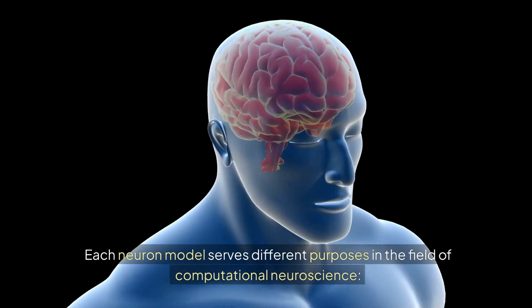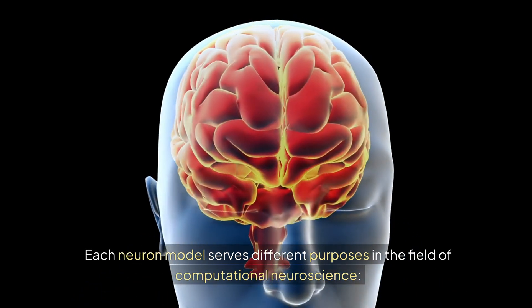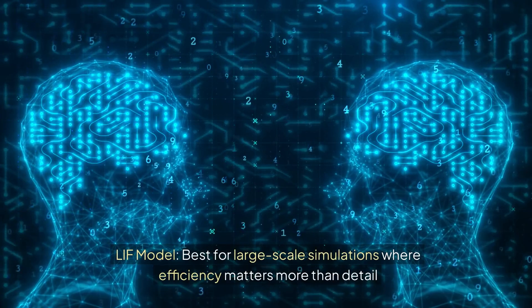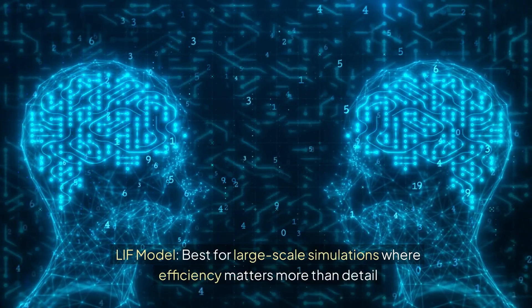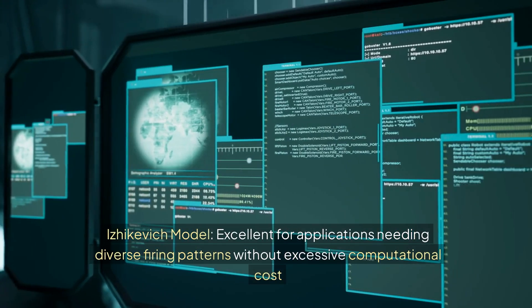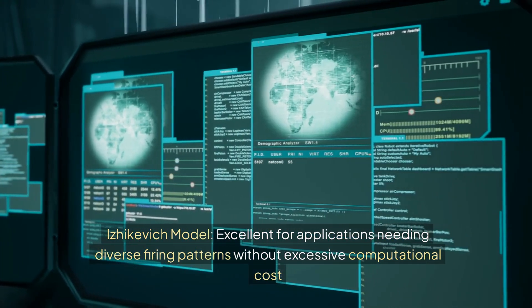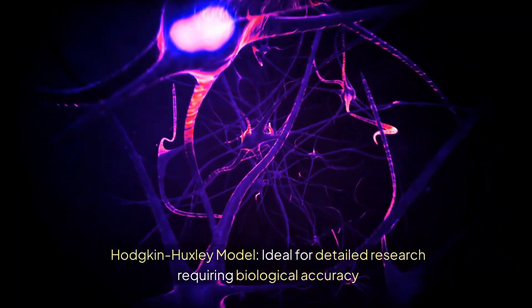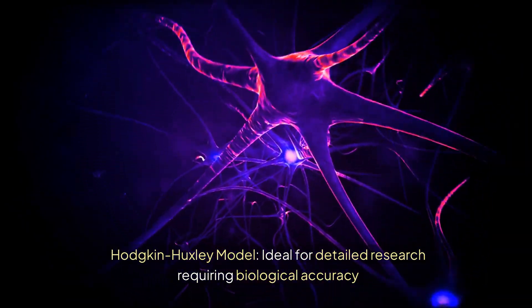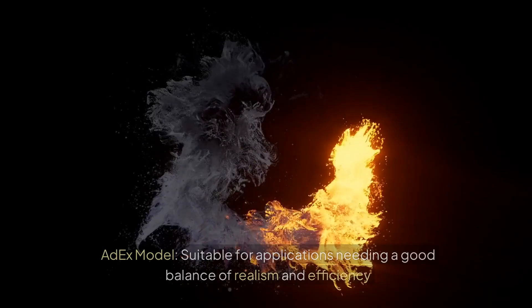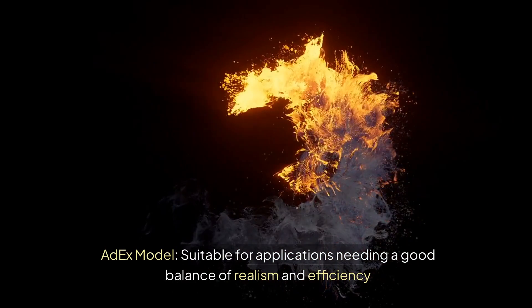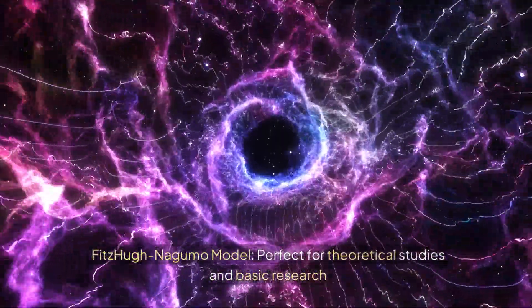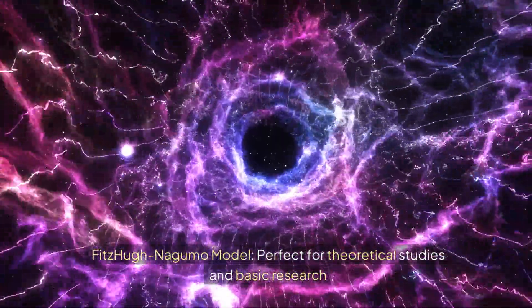Conclusion. Each neuron model serves different purposes in the field of computational neuroscience. LIF model: best for large-scale simulations where efficiency matters more than detail. Izhikevich model: excellent for applications needing diverse firing patterns without excessive computational cost. Hodgkin-Huxley model: ideal for detailed research requiring biological accuracy. ADEX model: suitable for applications needing a good balance of realism and efficiency. FitzHugh-Nagumo model: perfect for theoretical studies and basic research.